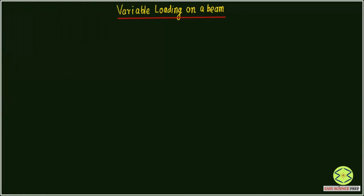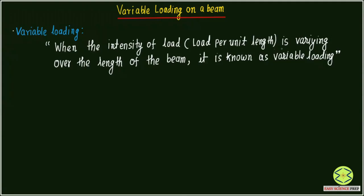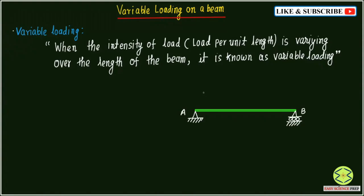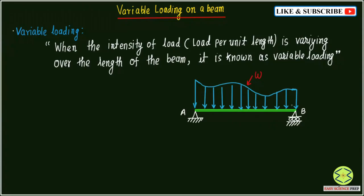Today we shall learn about variable loading on a beam. Variable loading occurs when the intensity of load, that is load per unit length, varies over the length of the beam. For beam AB, the load intensity (small w) is not constant — we may have intensity w_A at point A and a different intensity w_B at point B.